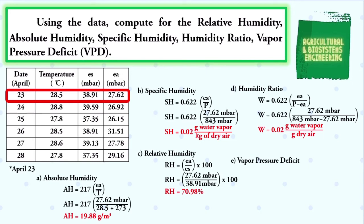Finally, we solve for the vapor pressure deficit. Using the formula VPD = es − ea, we substitute: VPD = 38.91 millibars − 27.62 millibars. We simply subtract and we have a final value for our vapor pressure deficit of 11.29 millibars.